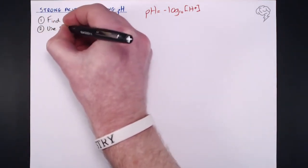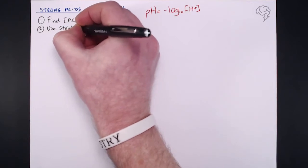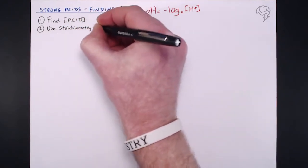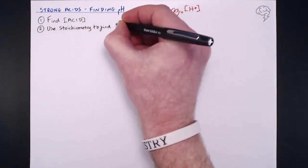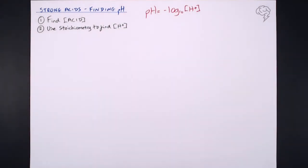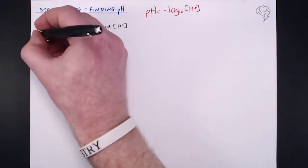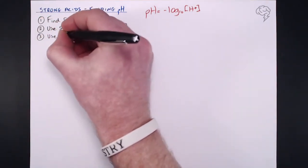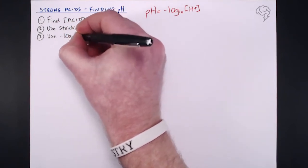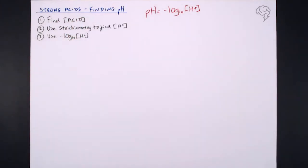Once you've found that, you need to decide: is it a monobasic or a dibasic acid? Use a bit of stoichiometry to find the hydrogen ion concentration. Because it fully dissociates, if you have one mole of acid, you've got one mole of hydrogen ions — or a one-to-two relationship, depending on if it's a mono or dibasic acid. Then just use minus log base 10 of that hydrogen ion concentration to give us the pH.